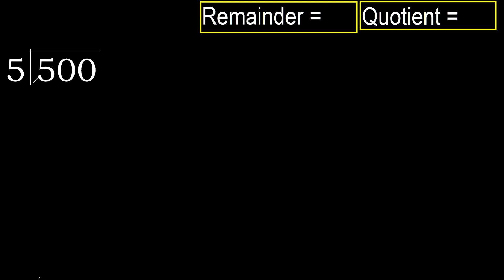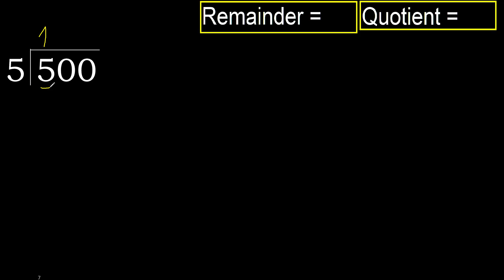500 divided by 5. 5 is not less, therefore with 5 — 5 multiplied by which number is nearest to 5 but not greater? 5 multiplied by 2 is 10, 10 is greater. Multiplied by 1 is 5, is not greater. Ok, subtract: 5 minus 5 is 0.